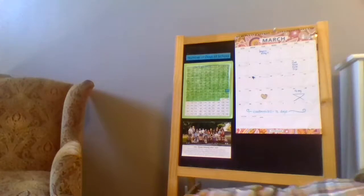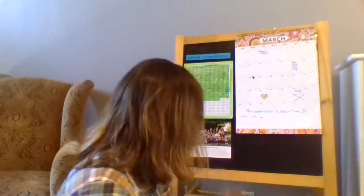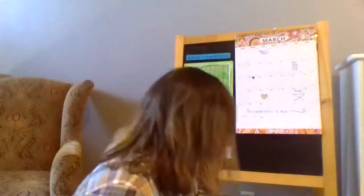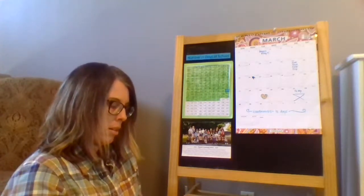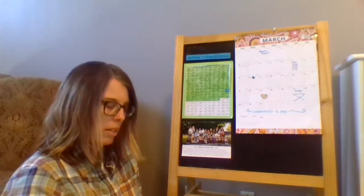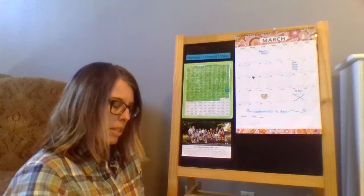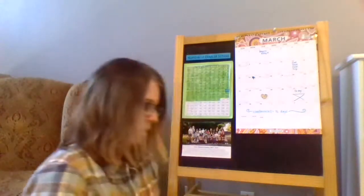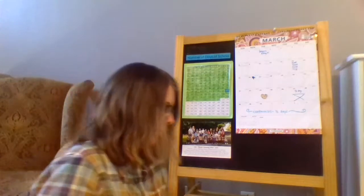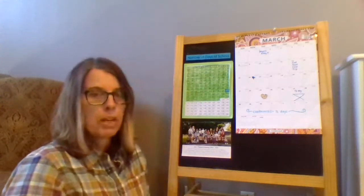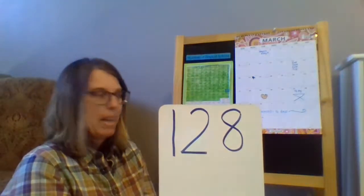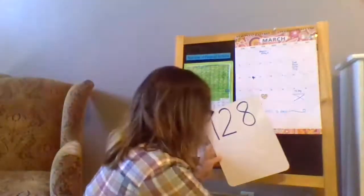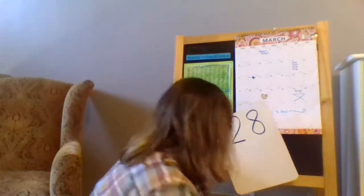I'm going to grab another ones block — I need Kate in here to help me with that. Let's write 128. Let's see what your 128 looks like. Here's mine: 128. I'll put that up here, and then let's look at the tens and ones for today.